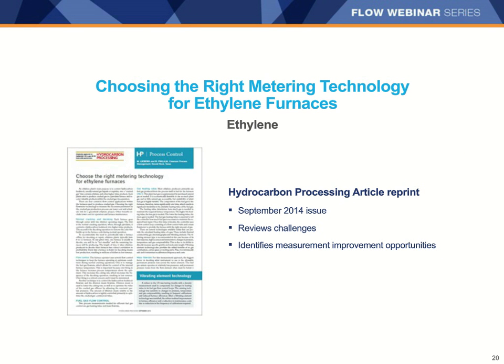We've talked about steam and hydrocarbon ratios, but before we move past the hot section, I did want to mention that fuel gas, decoking air, and inhibitor are also areas where we've seen improvements through using different flow technologies from Emerson. If you're interested in learning more about these applications, you can have a local salesperson discuss them with you, or you can download the article published in Hydrocarbon Processing that discusses best practices for measurement of an ethylene furnace. You can find it in your resource list listed as the ethylene hydrocarbon processing article.